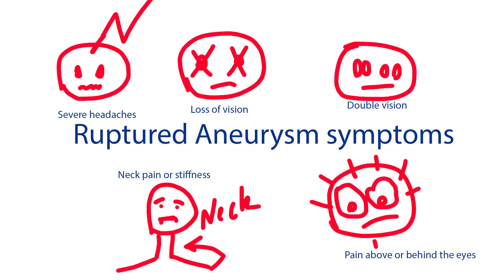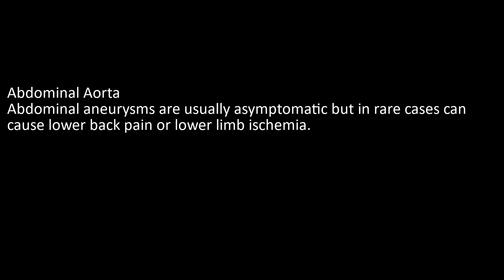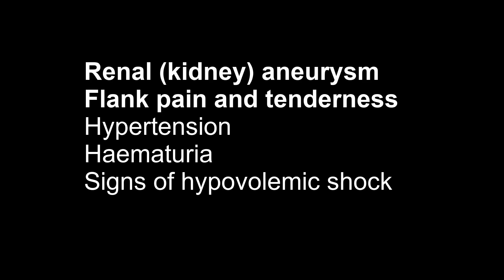For a ruptured aneurysm, symptoms of subarachnoid hemorrhage may be present: severe headache, loss of vision, double vision, neck pain or stiffness, pain in or behind the eyes. Abdominal aneurysms are usually asymptomatic but in rare cases can cause lower back pain or lower limb ischemia.